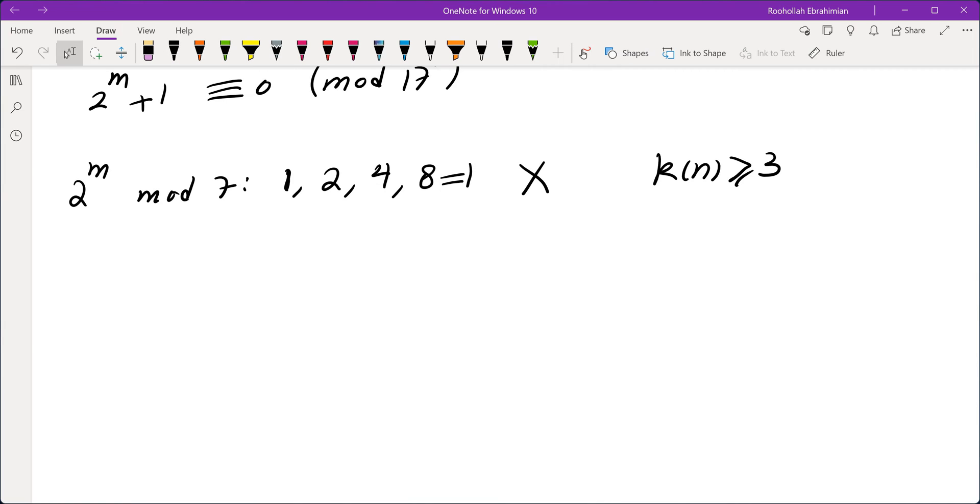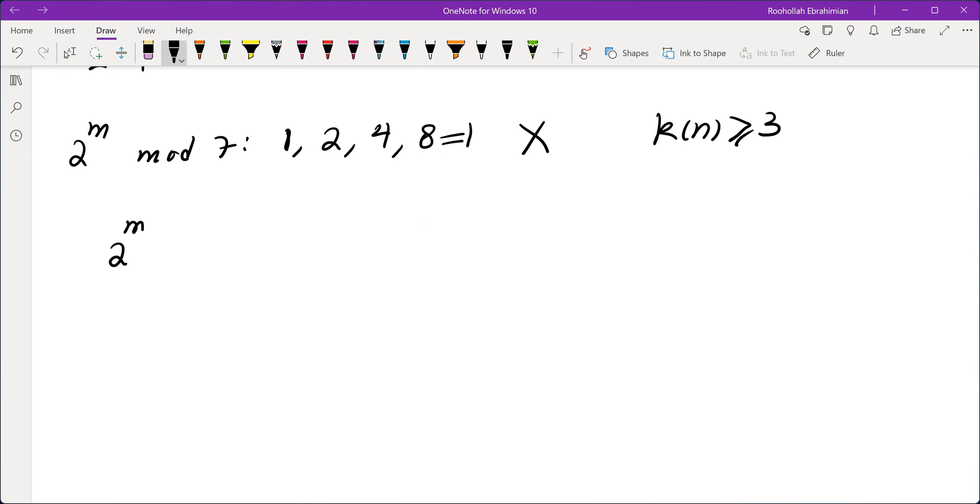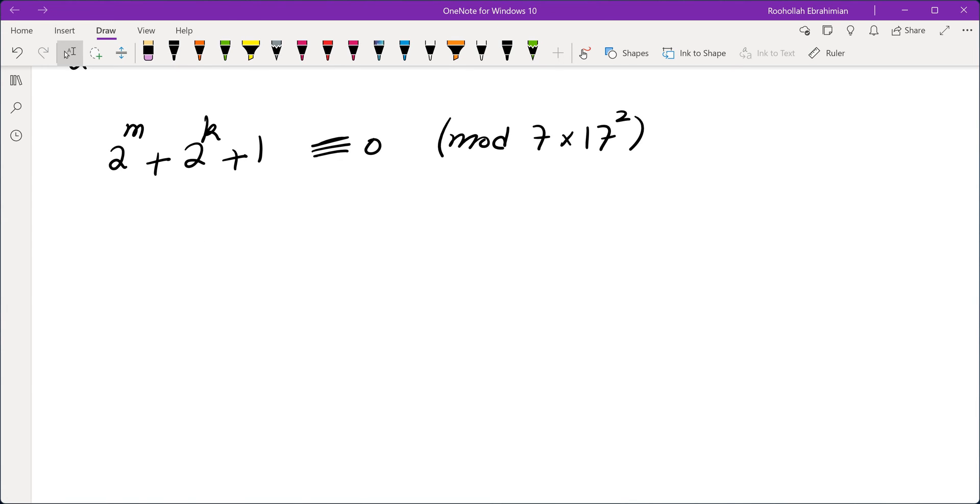So then I looked at a number with 3 digits of 1 in binary representation, and I was hoping that I can turn that into a multiple of 2023. Let's see if that's possible. So 2 to the power of m plus 2 to the power of k plus 1, is it possible that this is equal to 0 mod 7 times 17 squared?